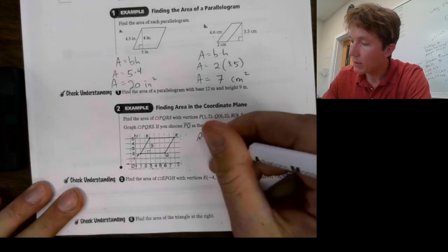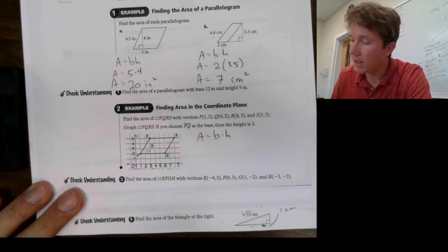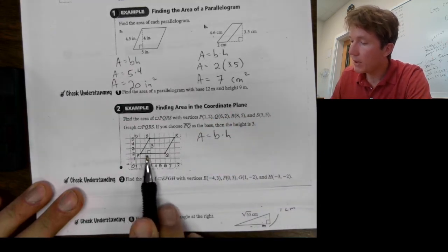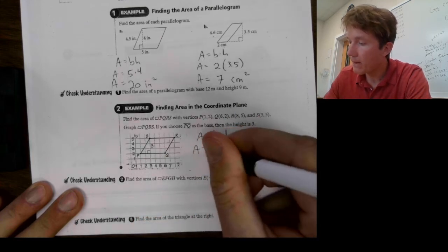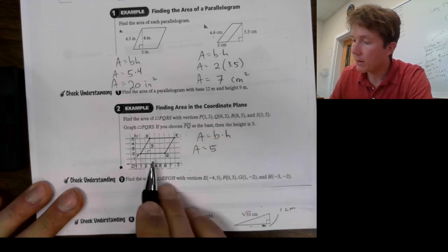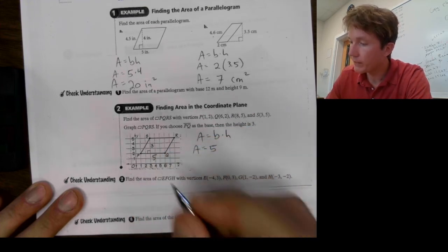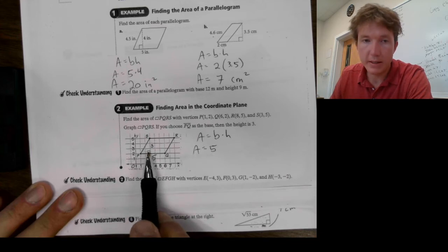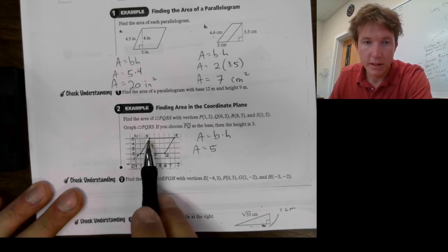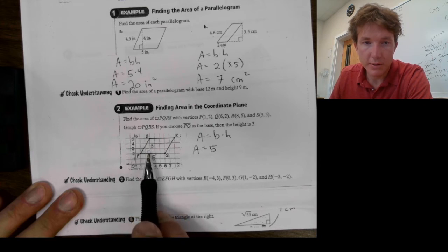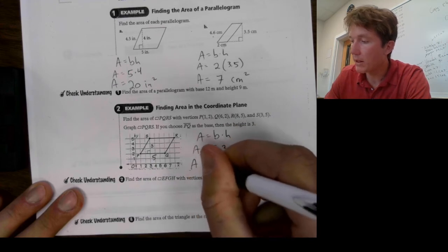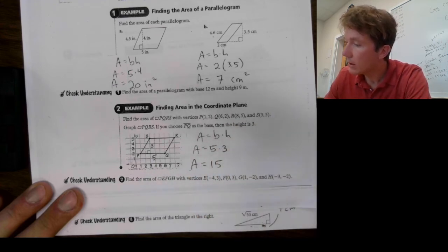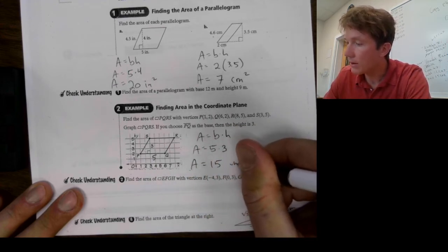Then they chose this as the base. PQ. So, we know the area is equal to base times height. The distance from P to Q is 1, 2, 3, 4, 5 units. So, PQ is gonna be 5. And then my height, that's gonna be my straight up and down segment. S, the point S to the base, PQ, will be 3 units. So, that's times 3. So, my area here is gonna be 15. And there's no units. So, I'll just say units squared.